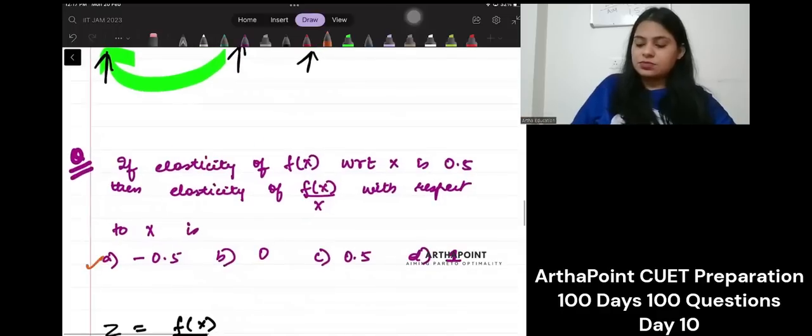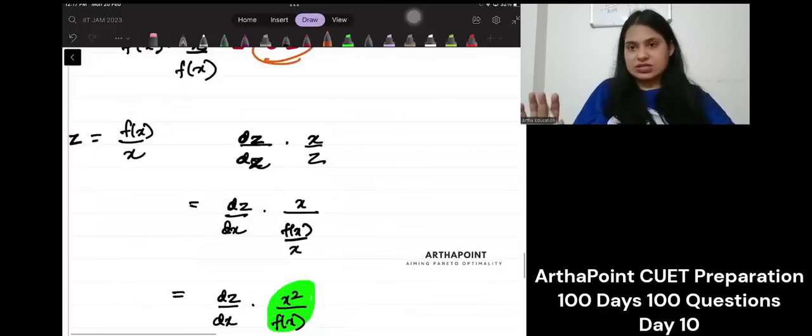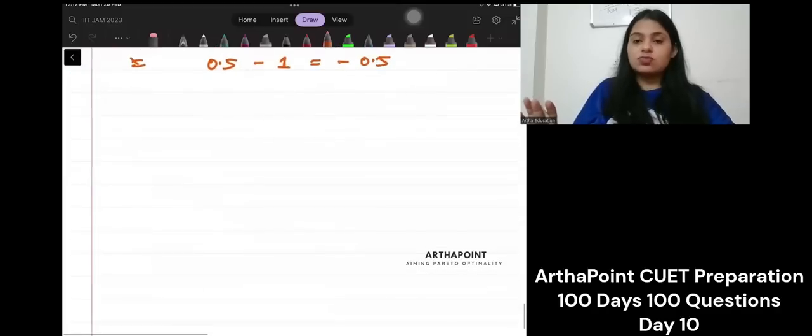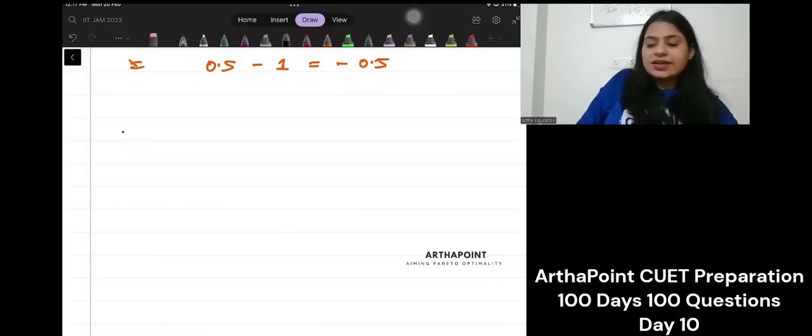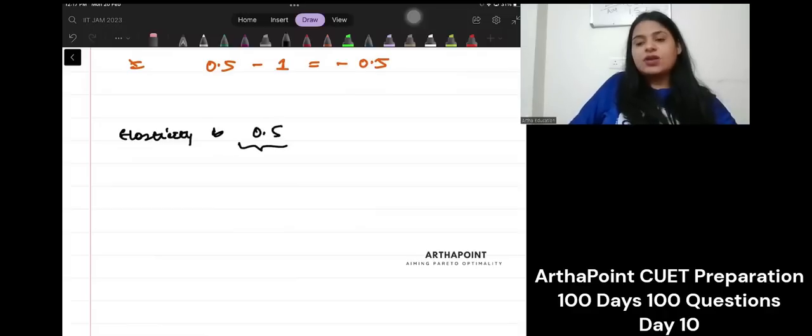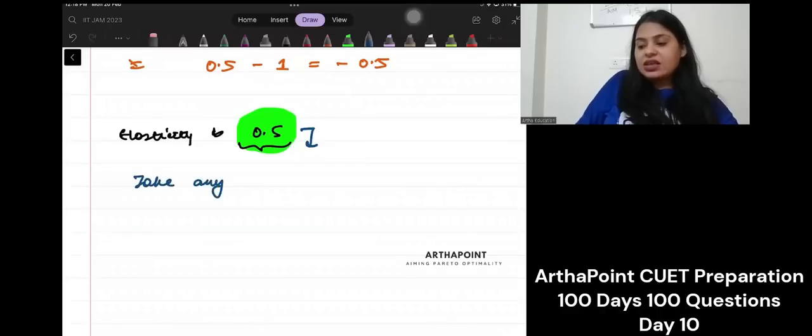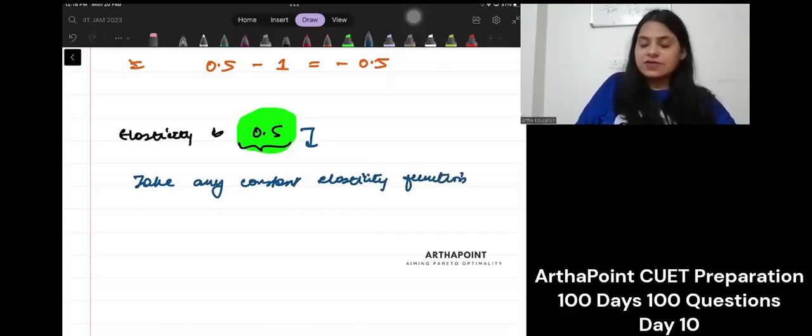This is method 1, where you are finding this elasticity. If you find this to be hectic method, difficult method, I will tell you an easier method also. You are given that elasticity is 0.5. Elasticity is 0.5. Function ke elasticity is 0.5. In such cases, whenever you are given constant elasticity of a function, you can take, please write down, take any constant elasticity function.